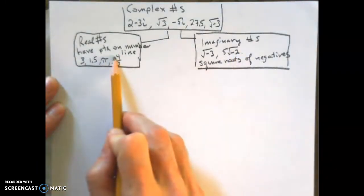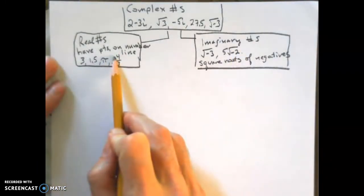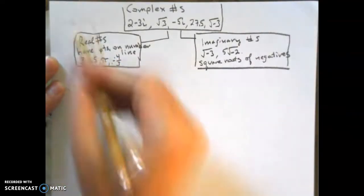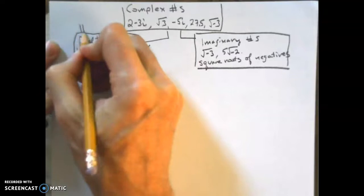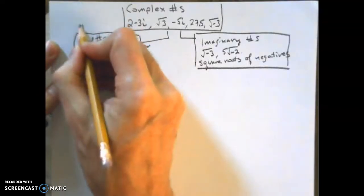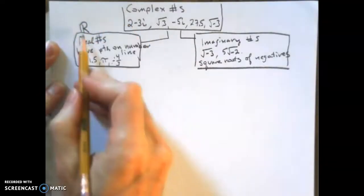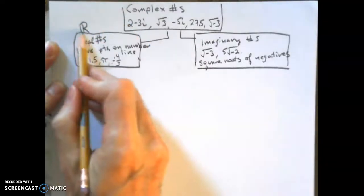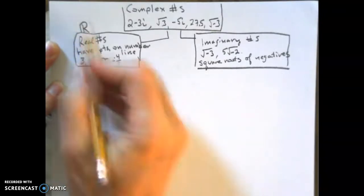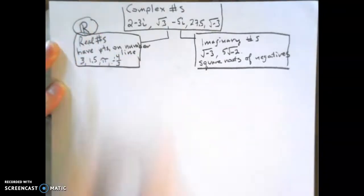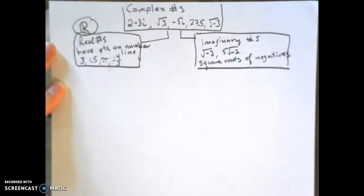We're going to break real numbers down into all the different classifications. You can abbreviate real numbers with a capital R — a lot of times they put two little sticks in it so it looks different than a regular capital R. That's the abbreviation for real numbers.